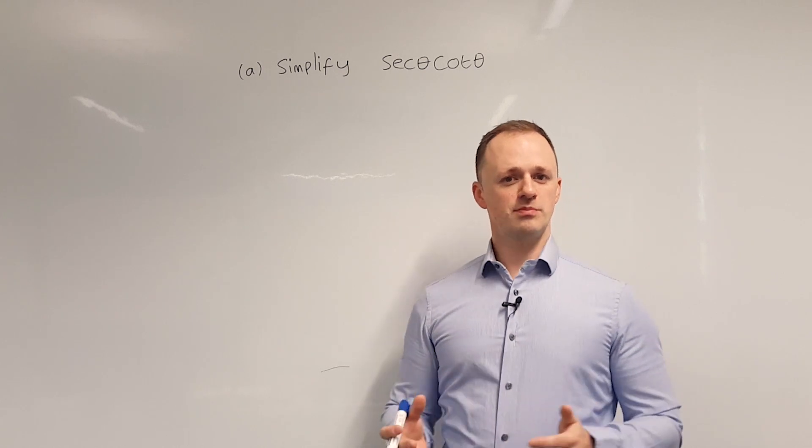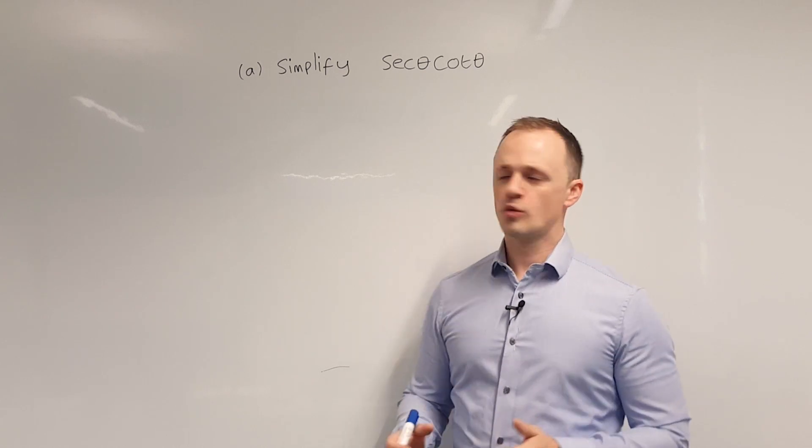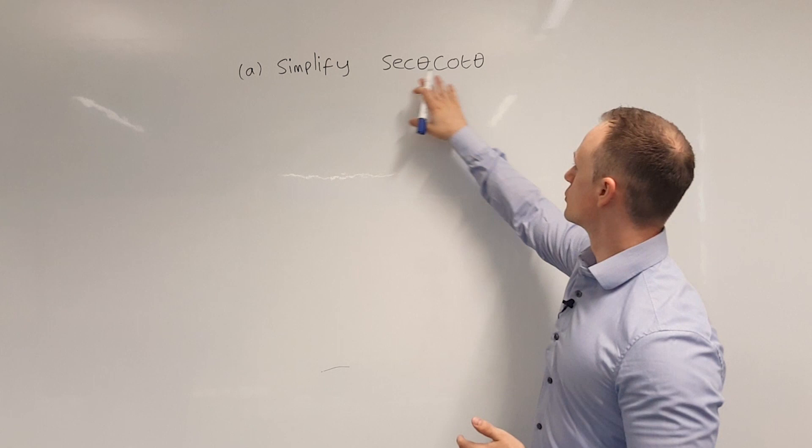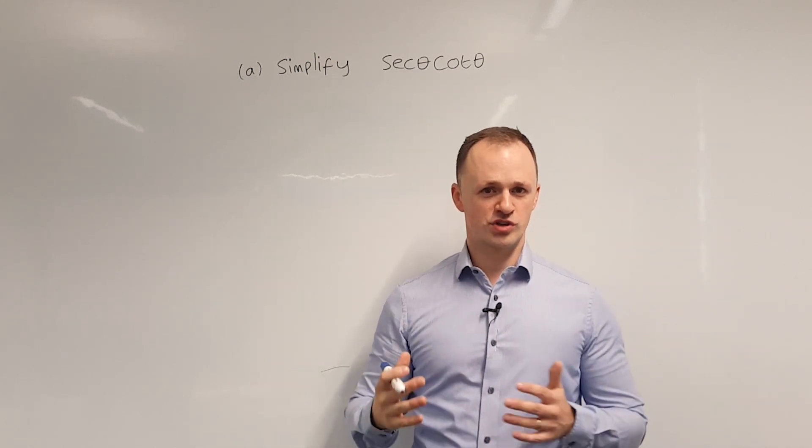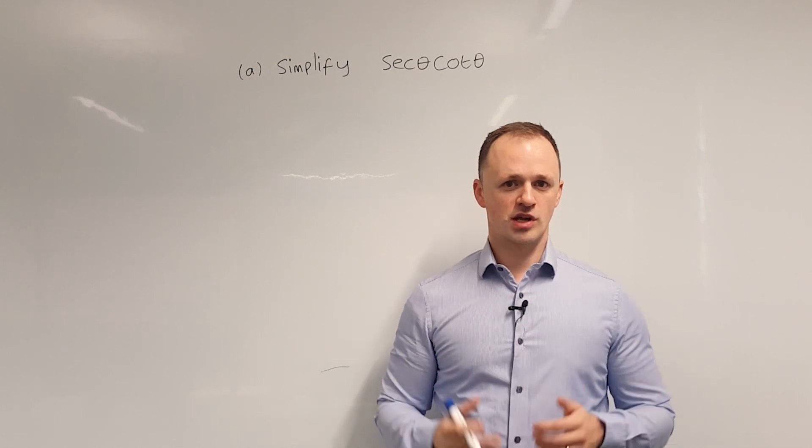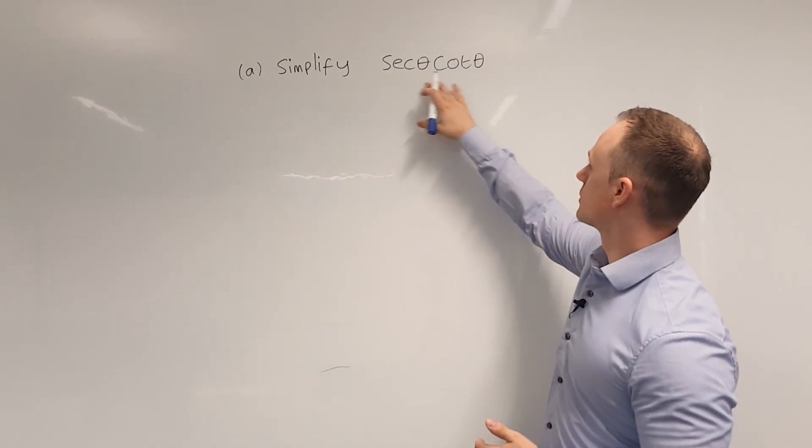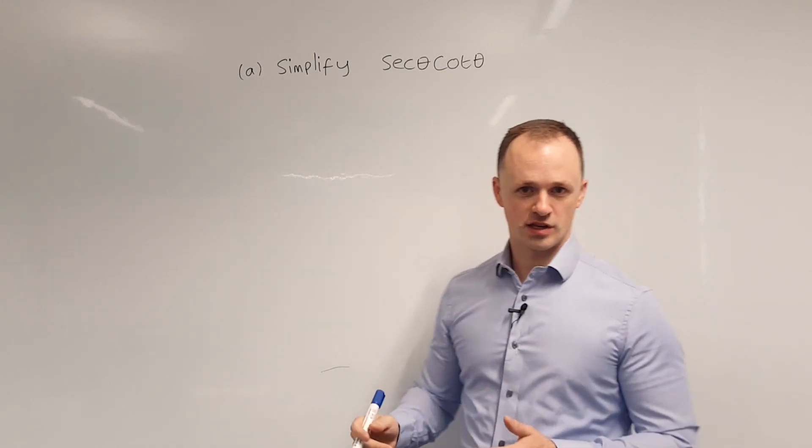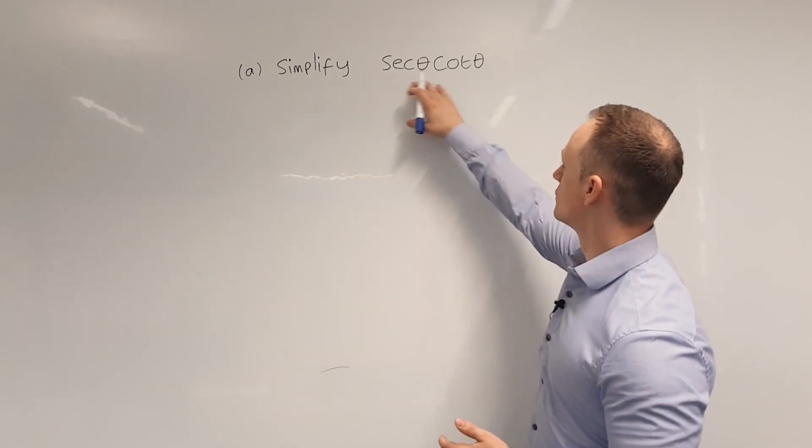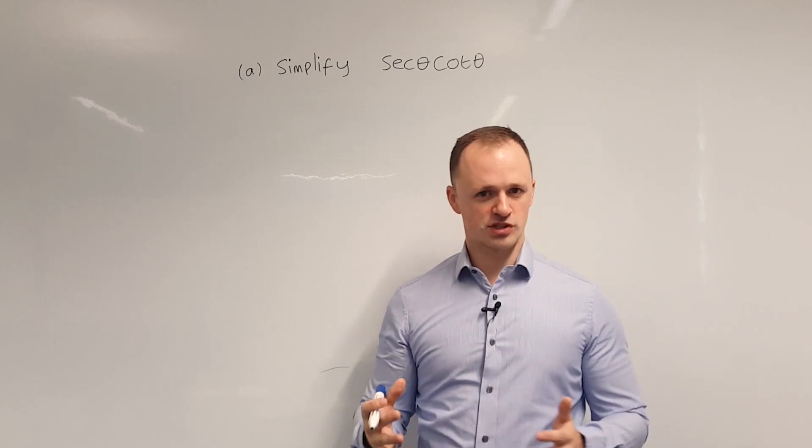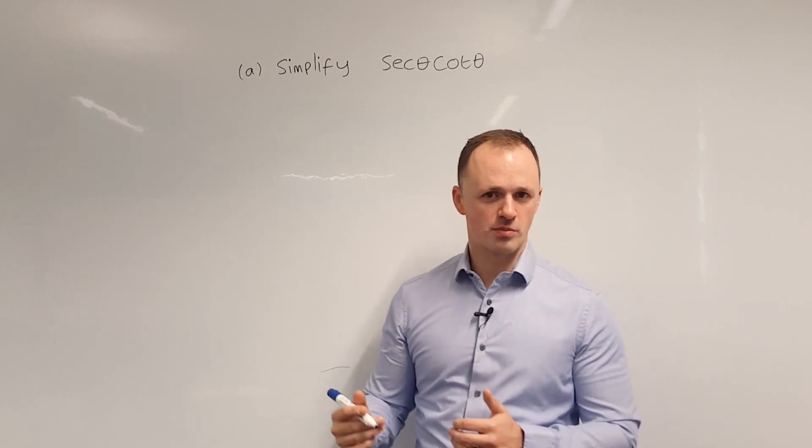In this example we're going to be looking at simplifying some trig functions where they're in the form where we've got one trig function multiplied by another and one or more of them are reciprocal trig functions. In this specific case we've got sec theta multiplied by cot theta and generally what's a good strategy when we're approaching these problems is to take each of these and write them in terms of sine and cos. So that's what I'm going to start by doing.